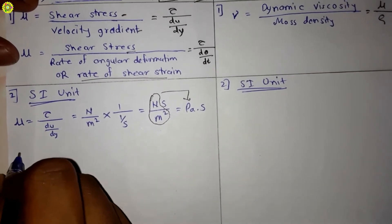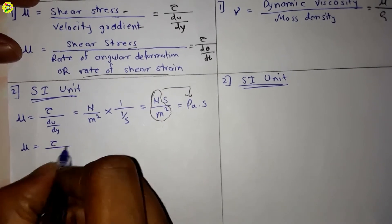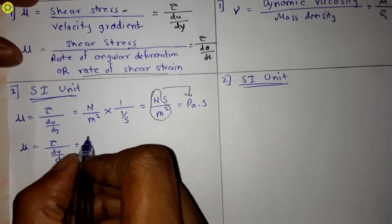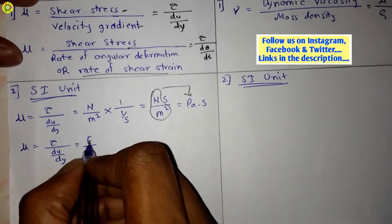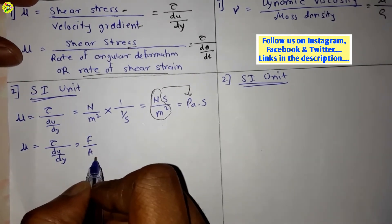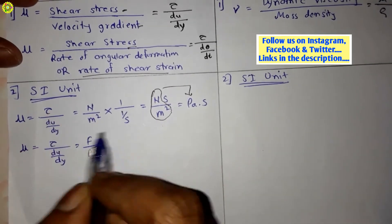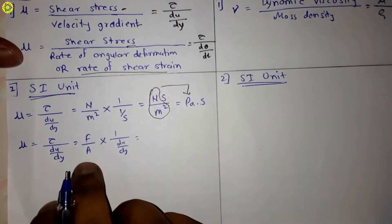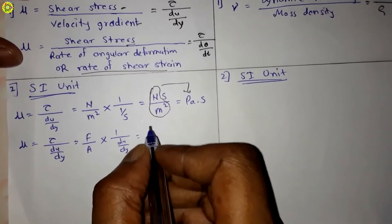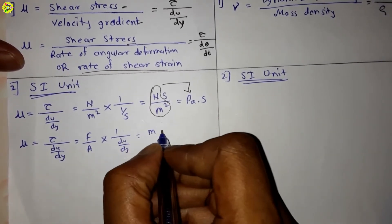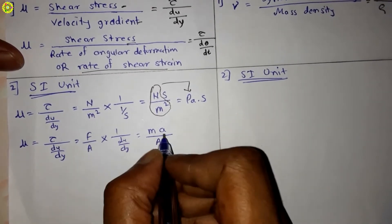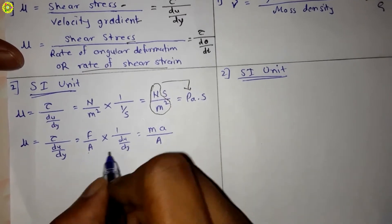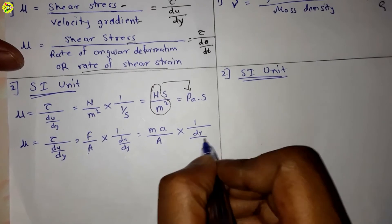We can further simplify by substituting τ = force/area, where force is in newtons and area in meter square. Then substituting force = mass × acceleration, we get μ = (m × a) / area × 1/(du/dy).